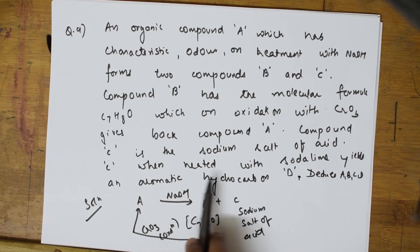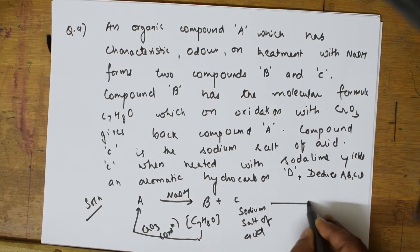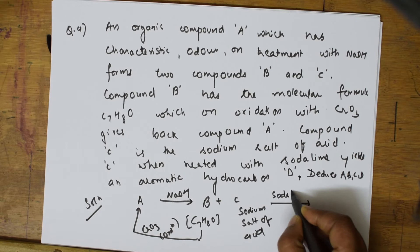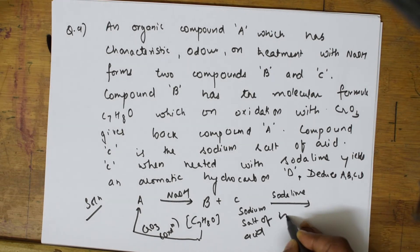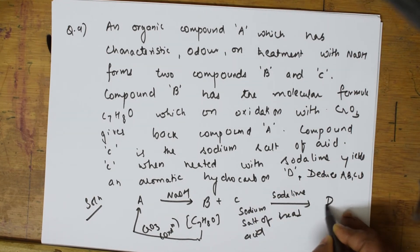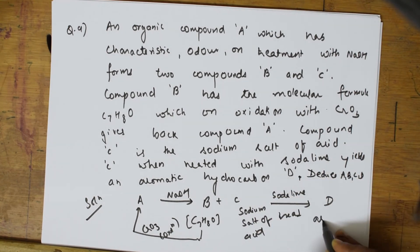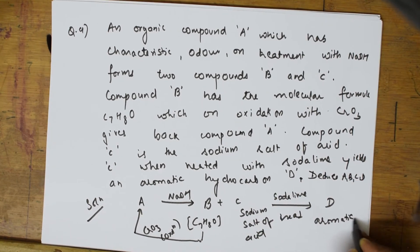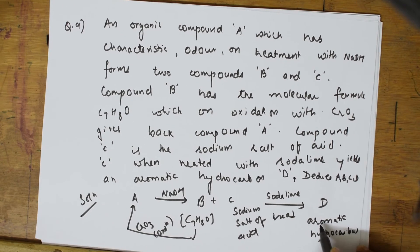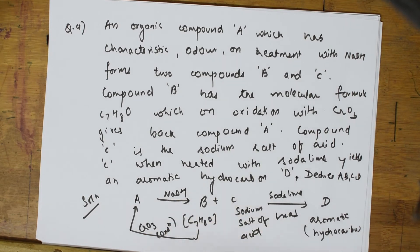Compound C when heated with soda lime gives an aromatic compound D. So one more clue: D is an aromatic hydrocarbon. I have to deduce structures of A, B, C, and D.